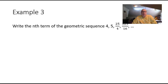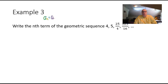Example 3: write the nth term of the geometric sequence 4, 5, 25/4, 125/16. We're going to use the formula a_n equals a1 times r to the power n minus 1. We know a1, but we need to find r through division.